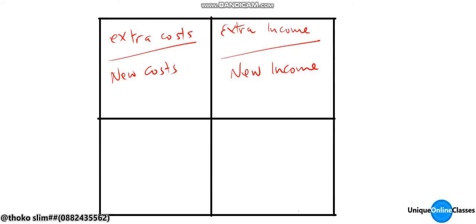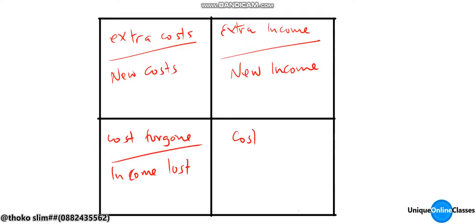Then we have cost foregone, also called income lost. Income lost is the income which we were expecting before changing the enterprise. And we have cost saved. When you talk about cost saved, as the name suggests, these are the costs which were supposed to be incurred before changing the enterprise.